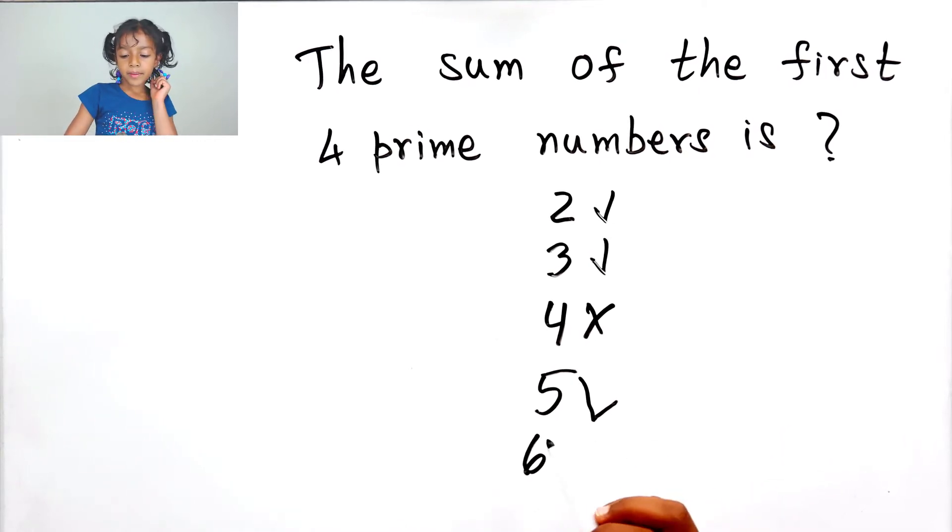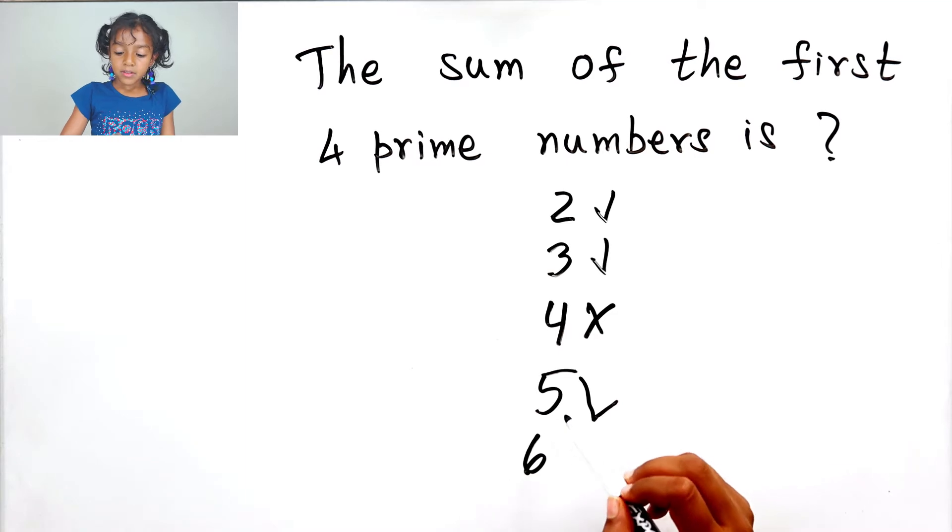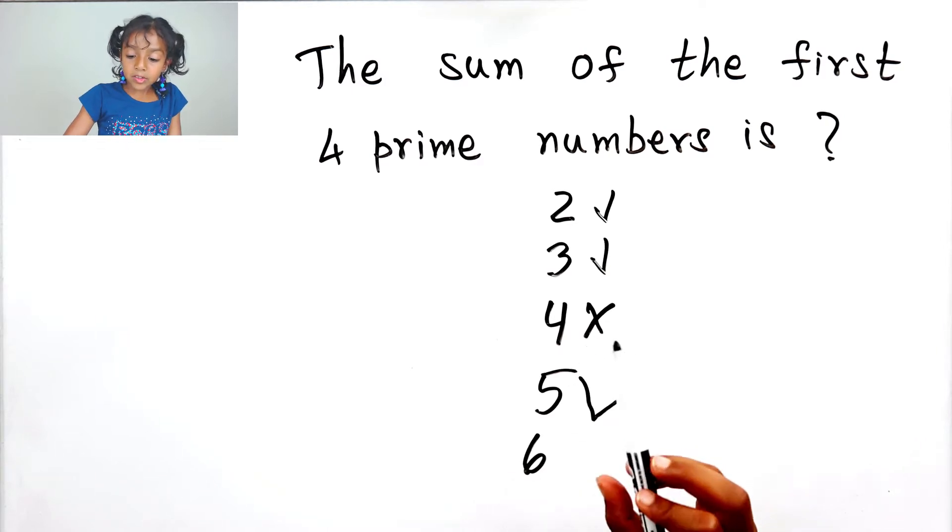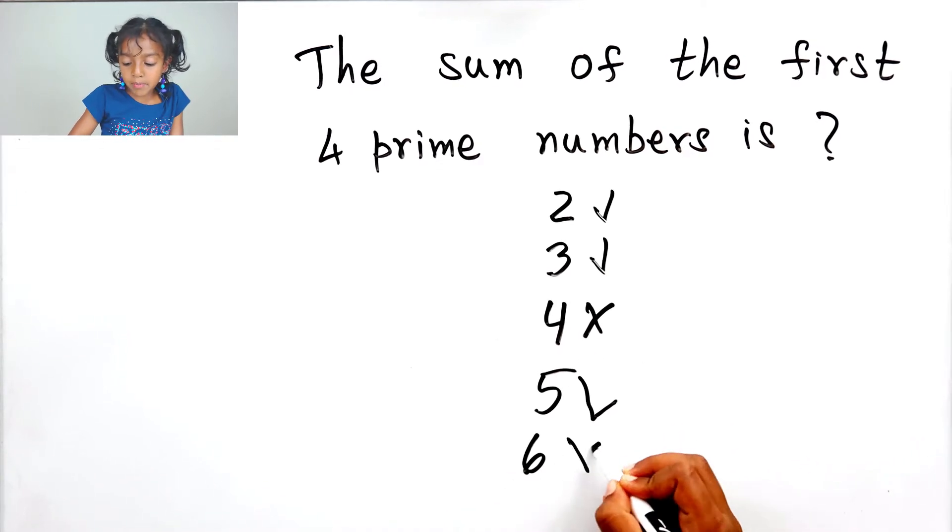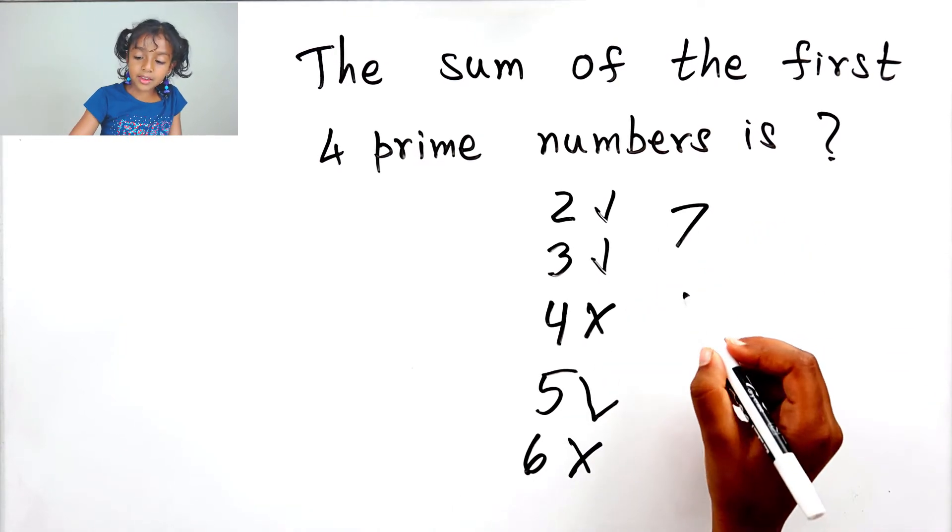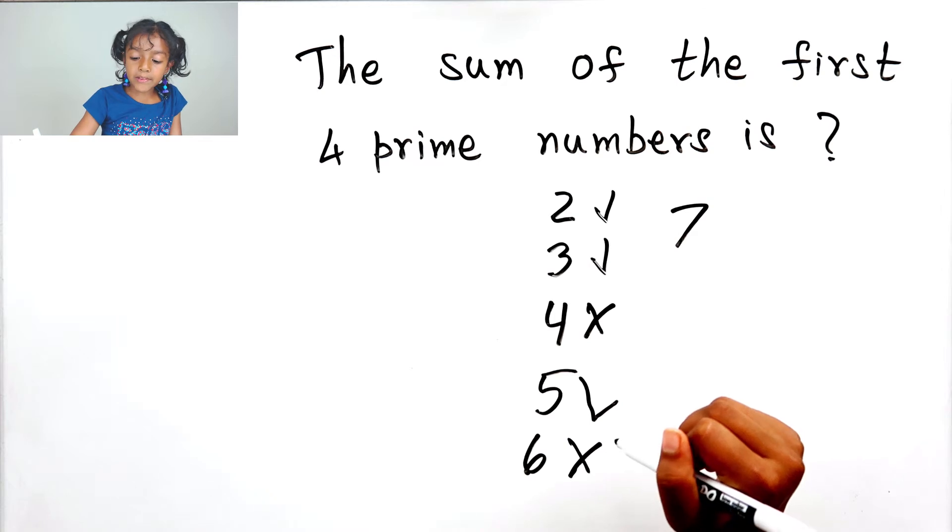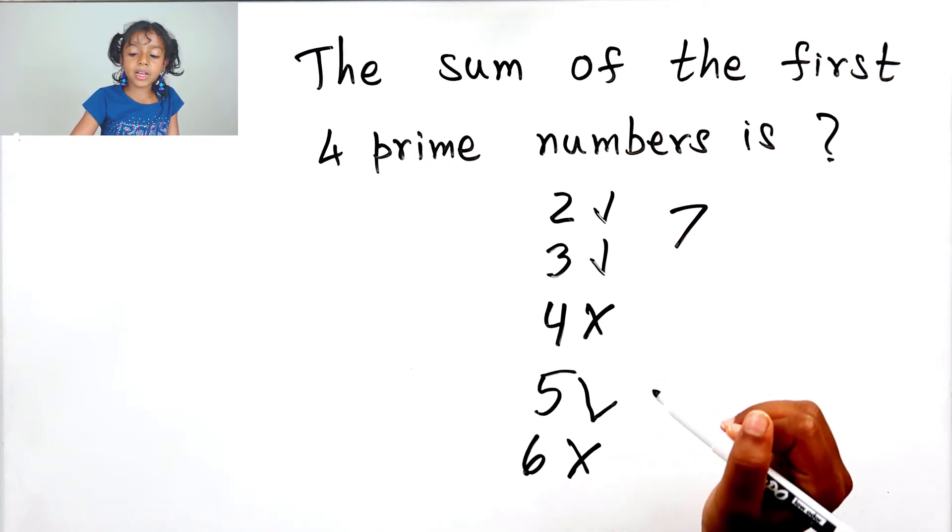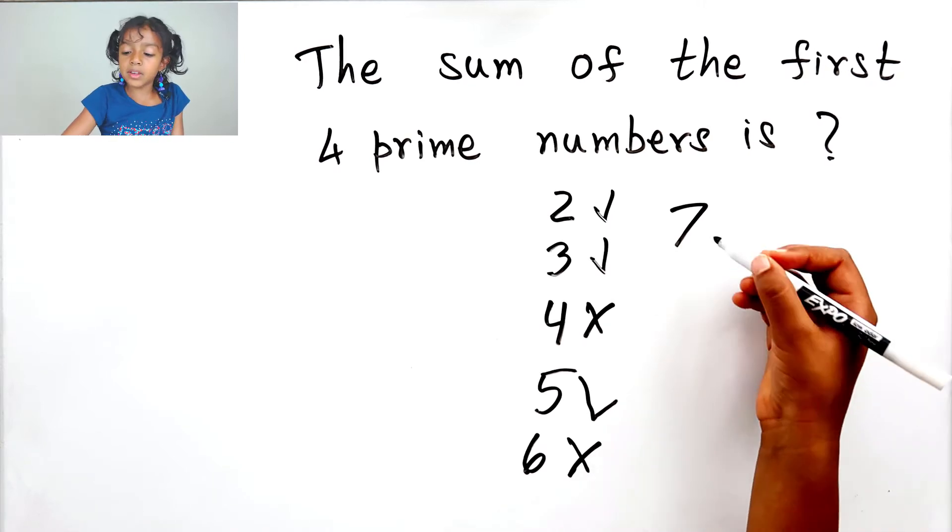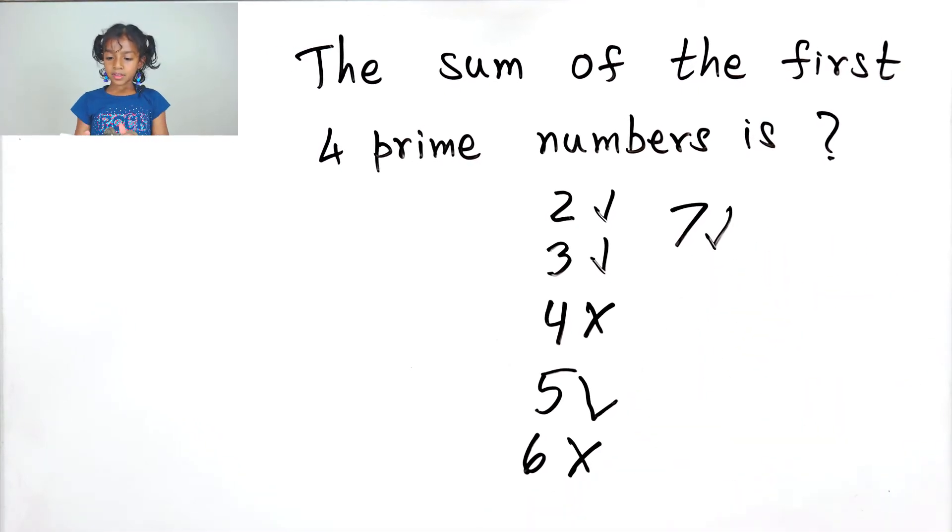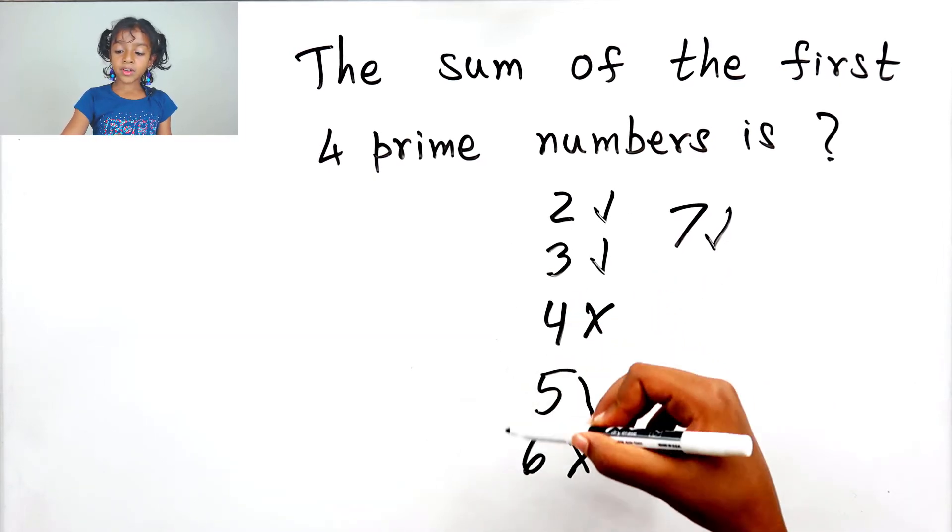What about six divided by five? No. Six divided by four? No. Six divided by three? Yes, so it's not a prime number. What about seven? Seven divided by six? No. Seven divided by five? No. Seven divided by four? No. Seven divided by three? No. Seven divided by two? No. So it's a prime number. You got the first four prime numbers.